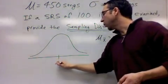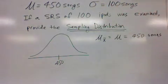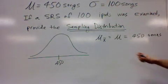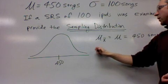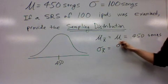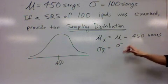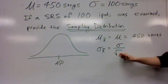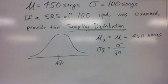So we know where the center of this normal curve is. We also know what the standard deviation is as well. We know the standard deviation of the sampling distribution is equal to the standard deviation of the individuals divided by the square root of the number that's in our sample.